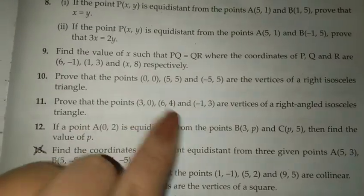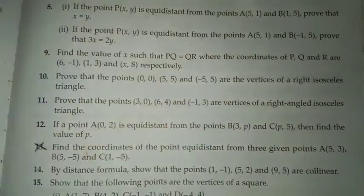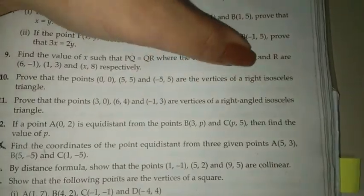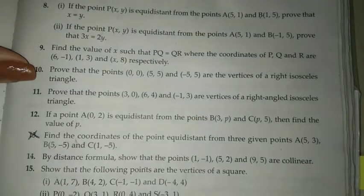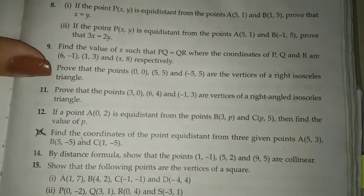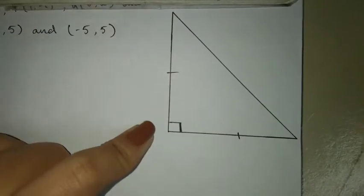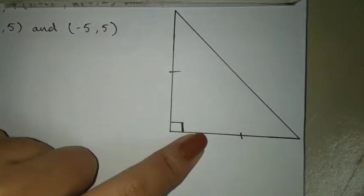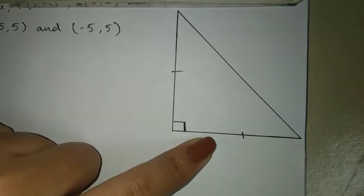We have number 10 and 11. Now over here, they've given us 3 points and we have to prove that they are the vertices of a right isosceles triangle. Right angle triangle means right angle, and isosceles means two sides are equal.